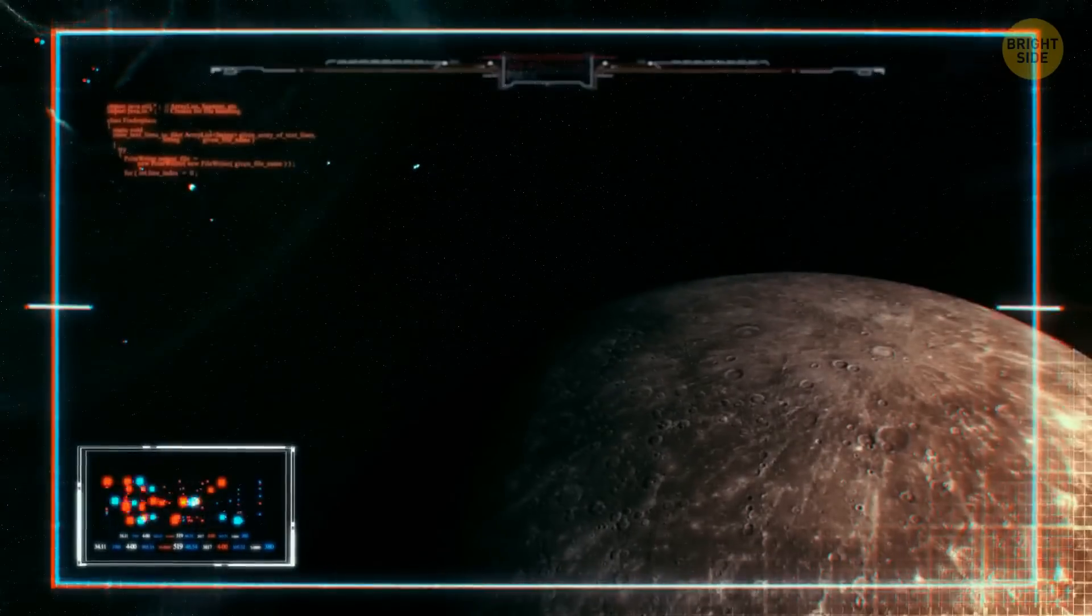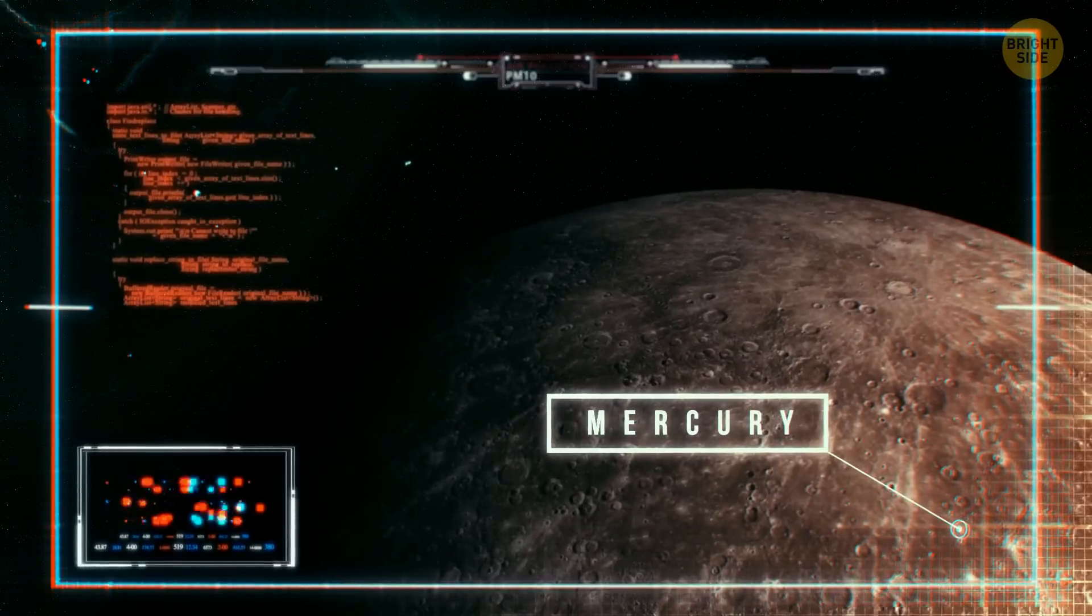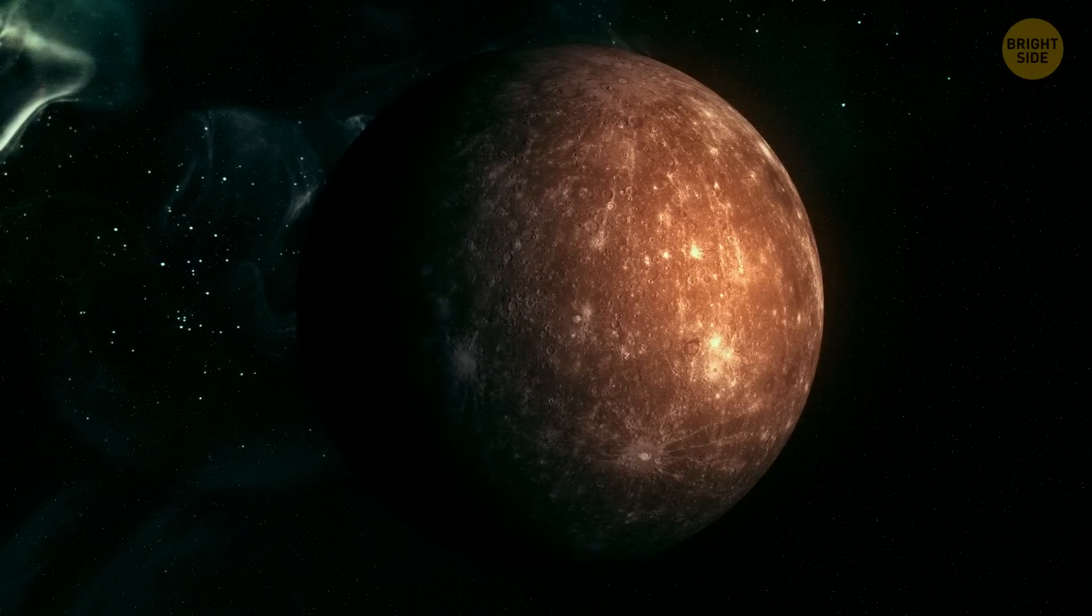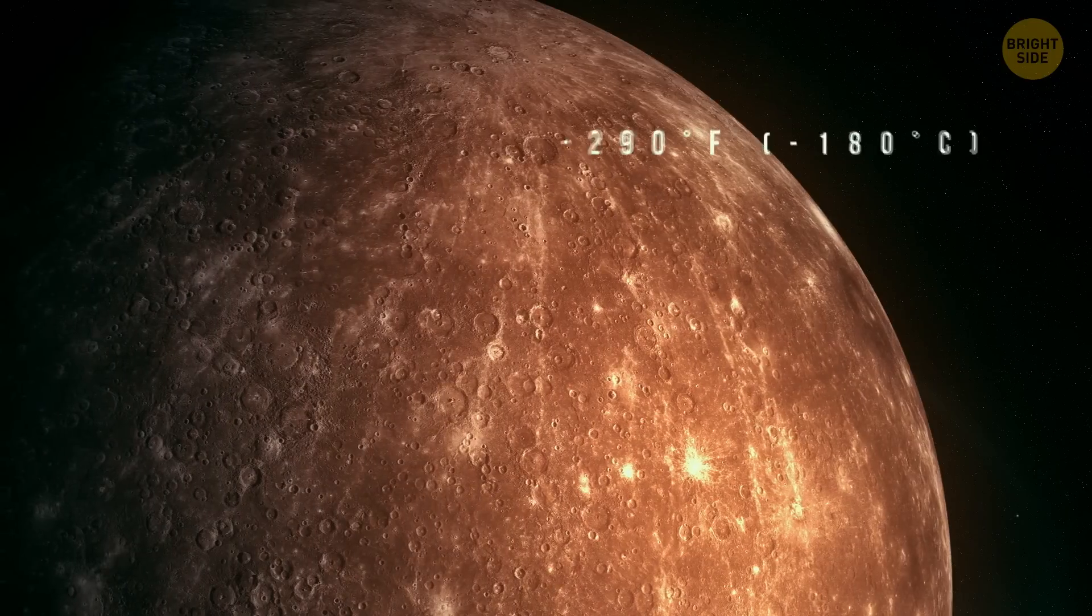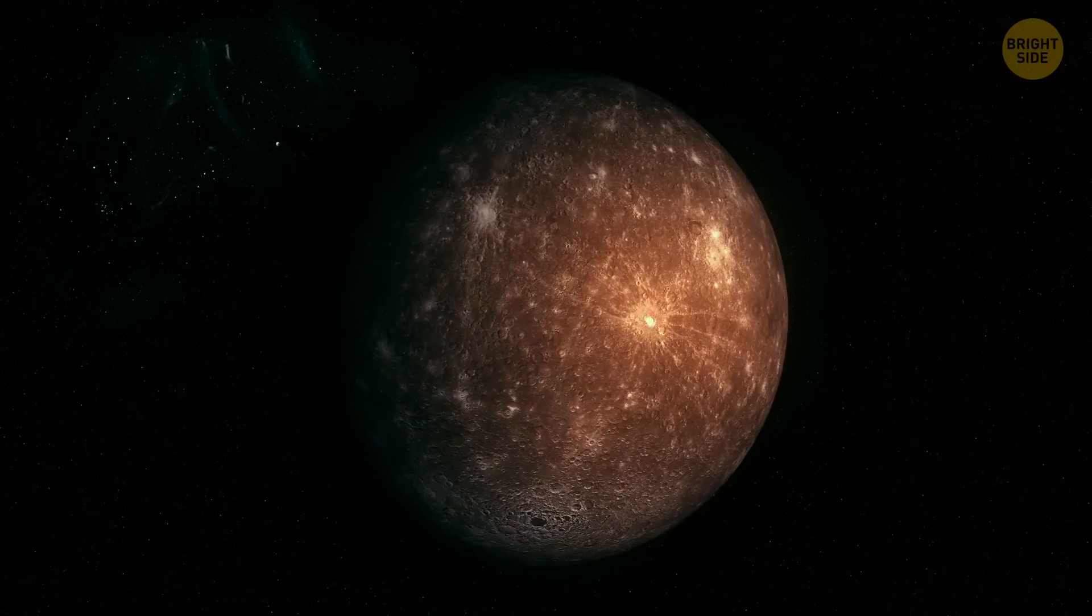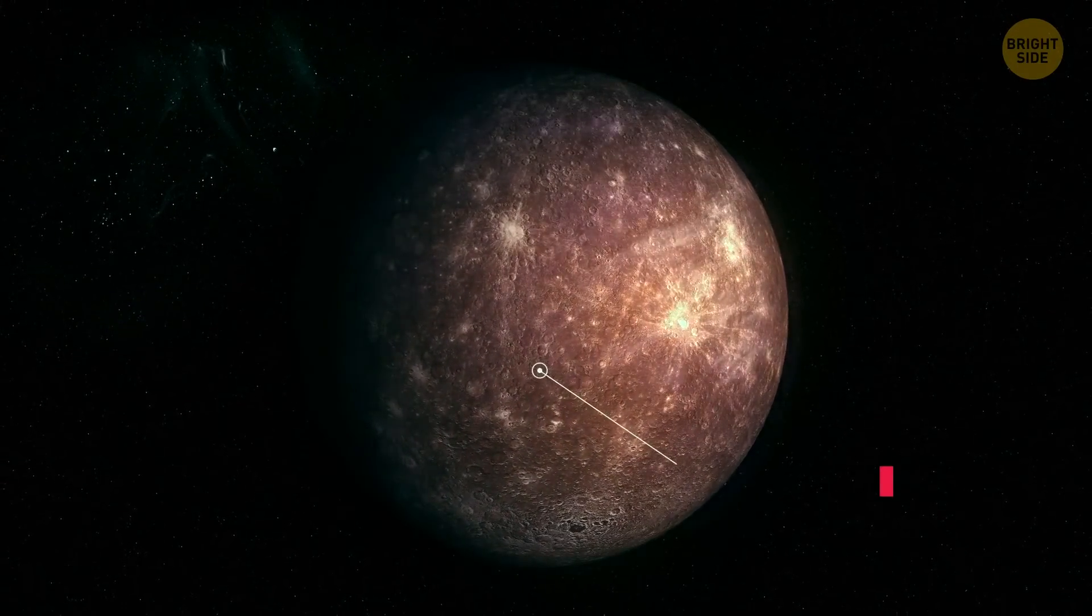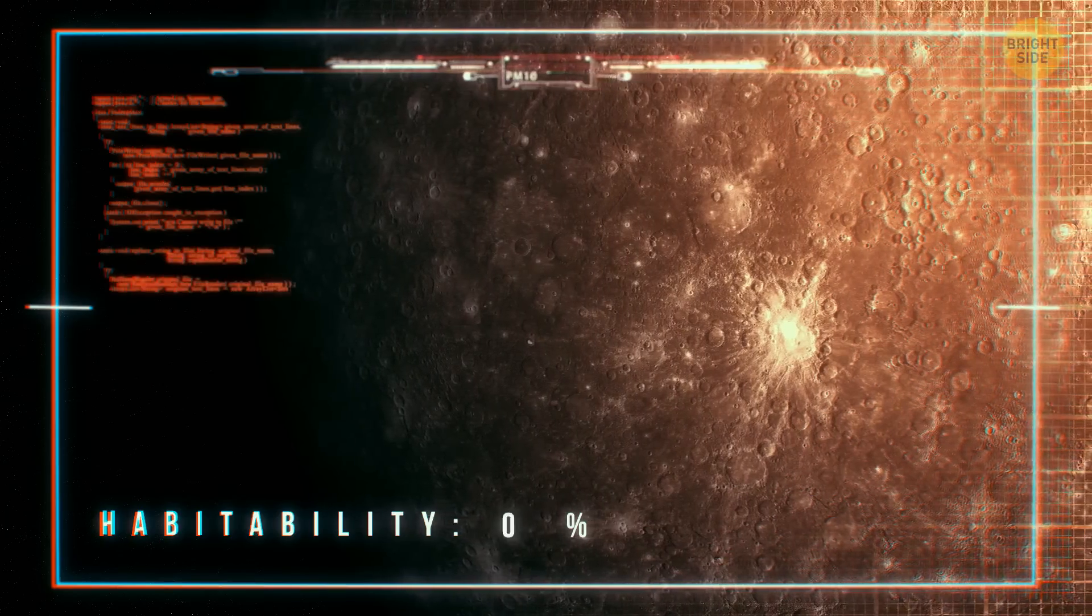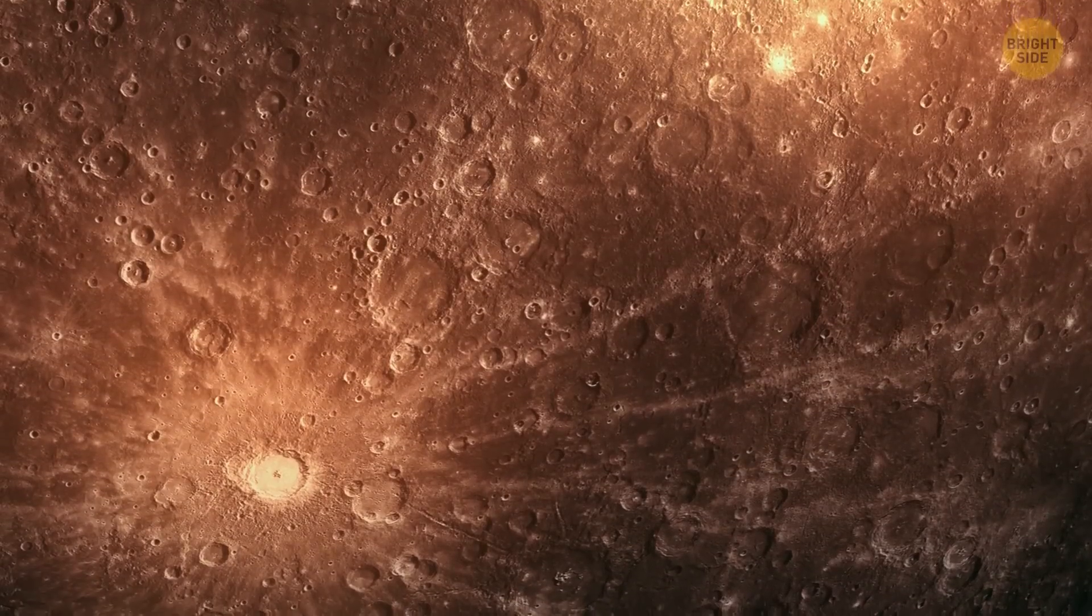Hop on! I've prepared a tour around Earth's fellow planets. Let's start with Mercury, the smallest planet in the solar system. During the day, the temperature on the surface of this planet can reach 800 degrees Fahrenheit, and during the night, it can drop to negative 290 degrees Fahrenheit. The temperatures here are so extreme because the planet has no atmosphere. Instead of it, Mercury has a thin exosphere. That's one of the reasons why Mercury is not habitable. The temperatures and solar radiation are too extreme for any organism to survive there.